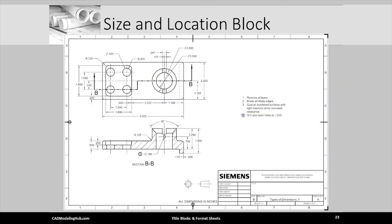Here I've added a Siemens B size drawing format and title block to the previously created drawing of the size and location block. The remainder of this lecture will focus on completing and editing the default Siemens title block.